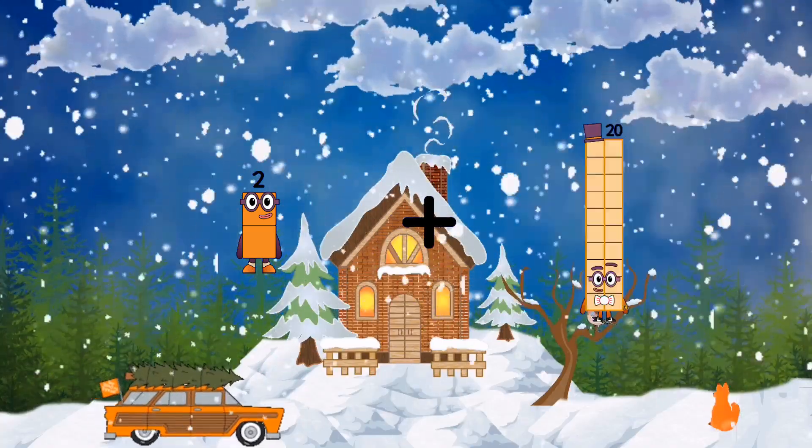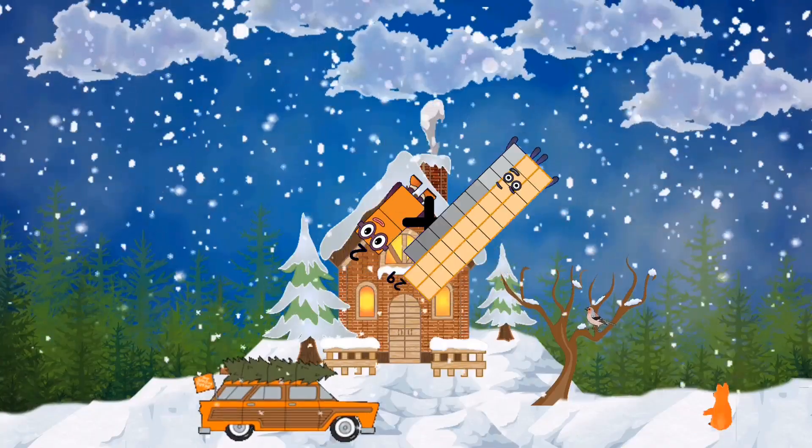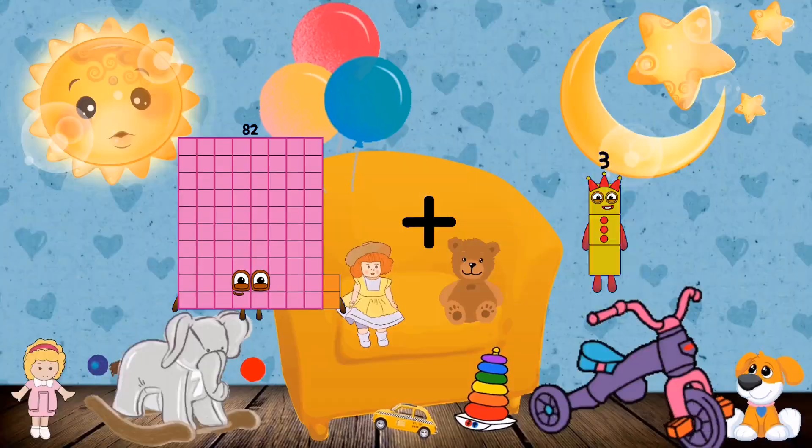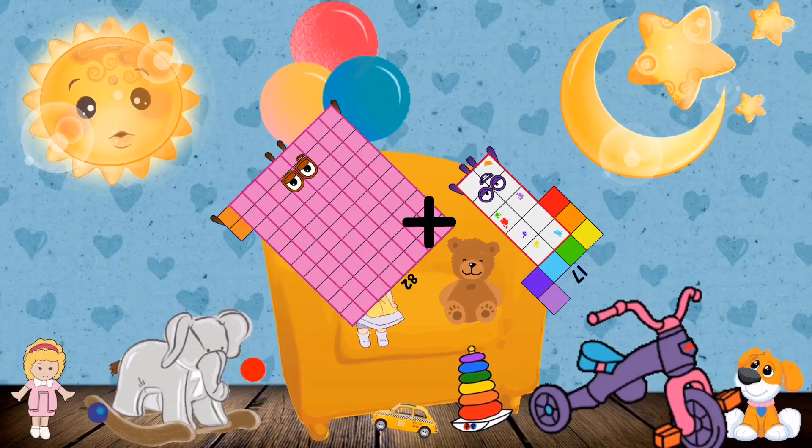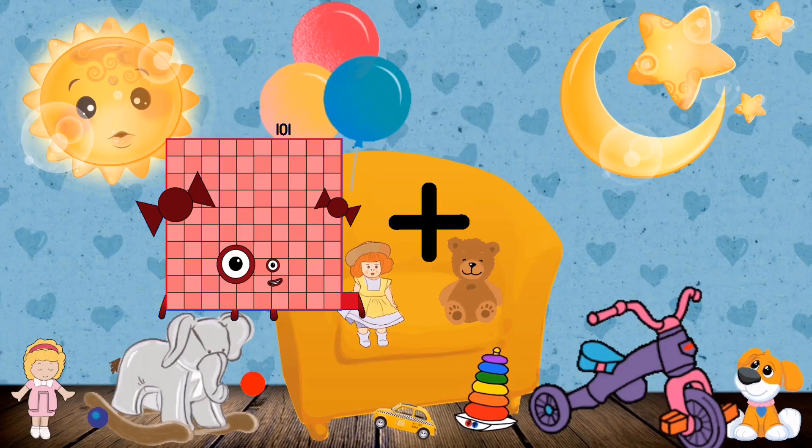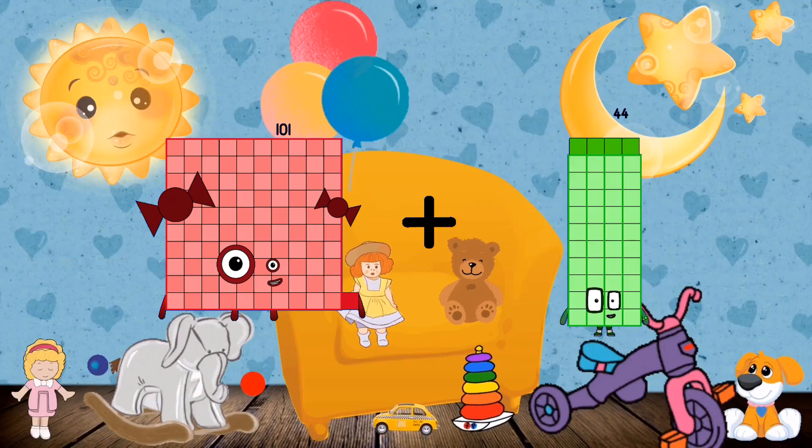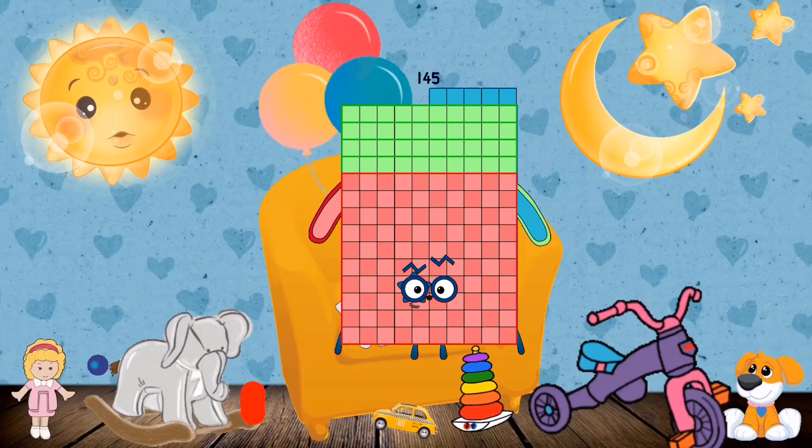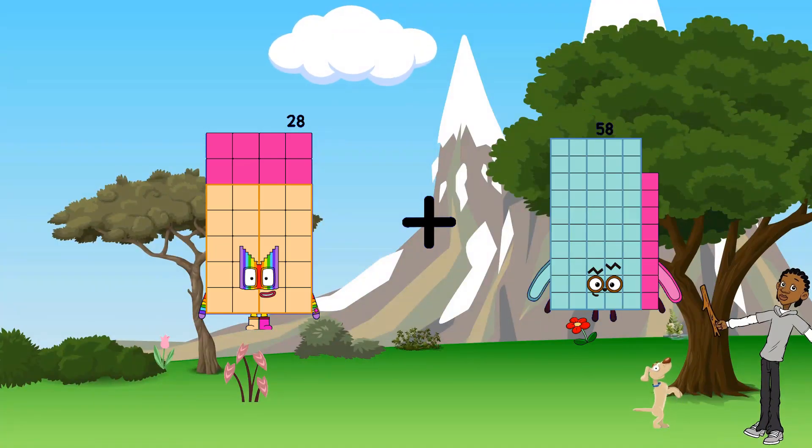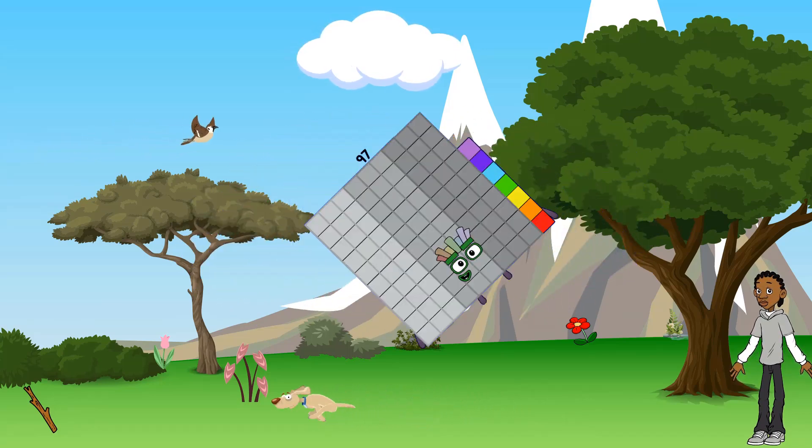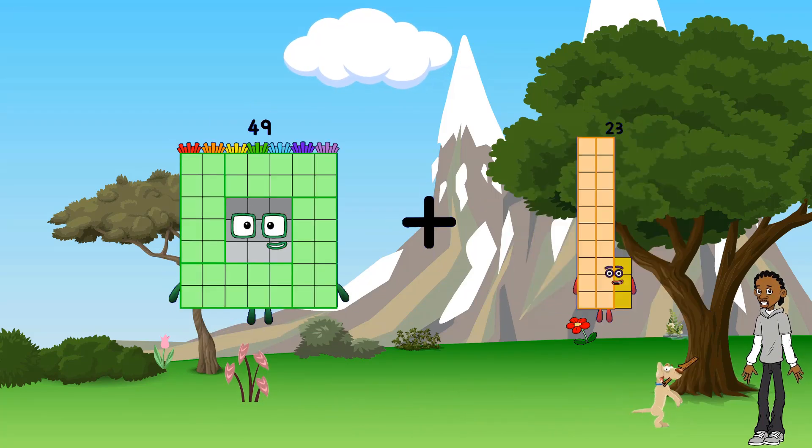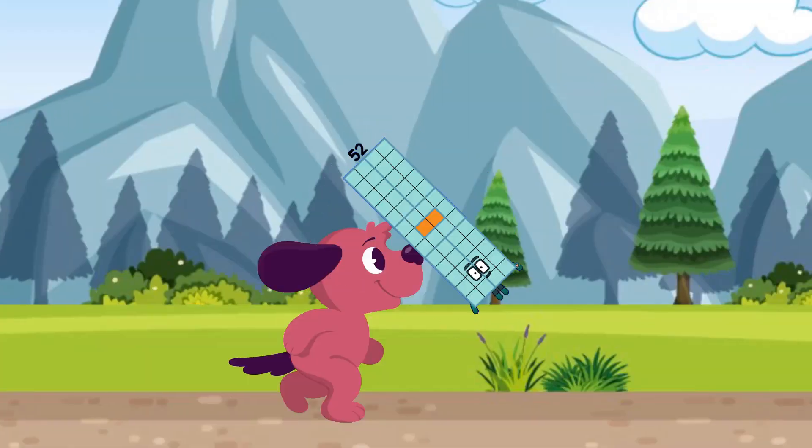2 plus 29 equals 31. 82 plus 17 equals 99. 101 plus 44 equals 145. 28 plus 69 equals 97. 49 plus 3 equals 52.